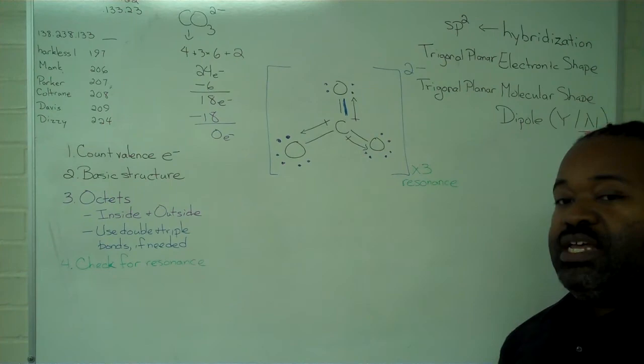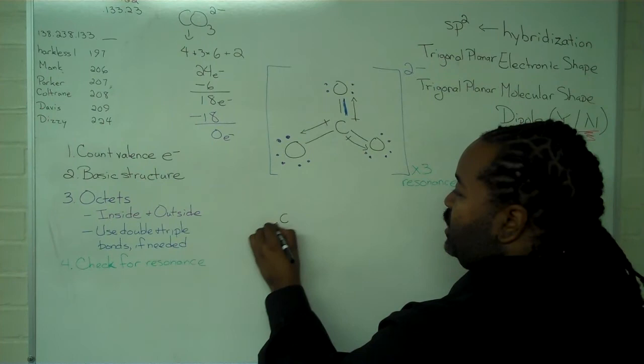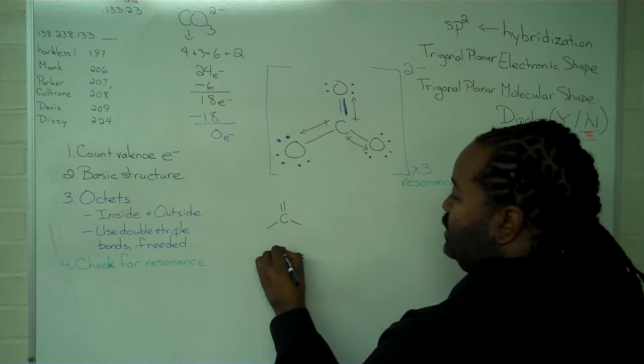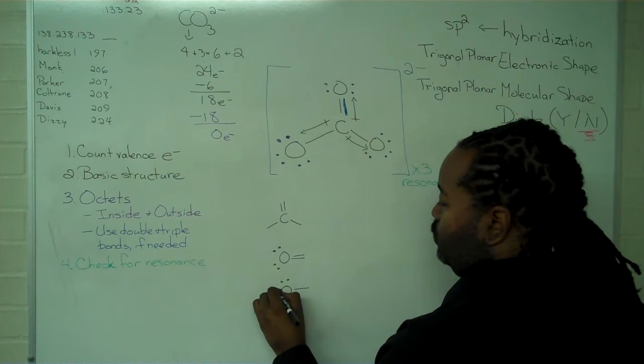So now that we've completed those pieces of information, the last thing to do is to check for a formal charge. So we're going to need to check the carbon, the oxygen with a double bond, and the two oxygens with a single bond.